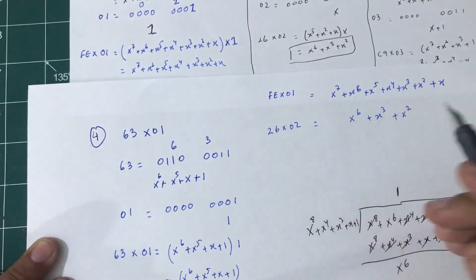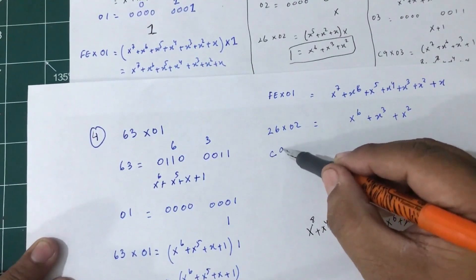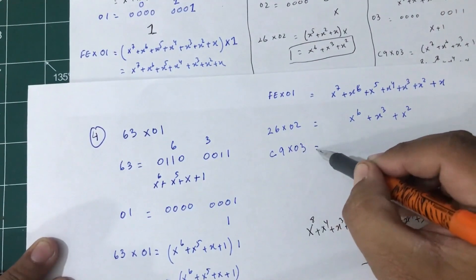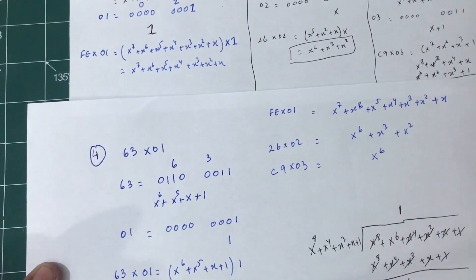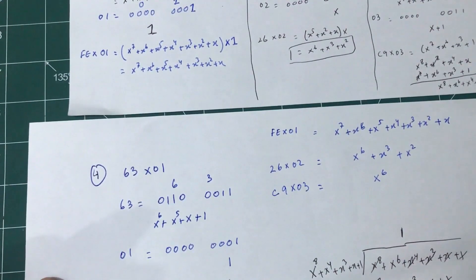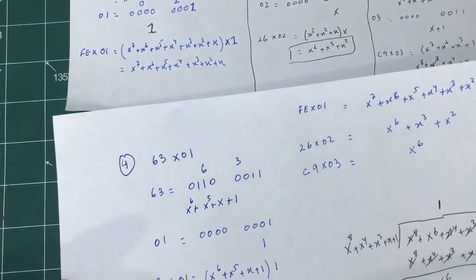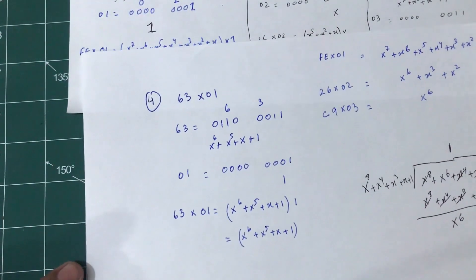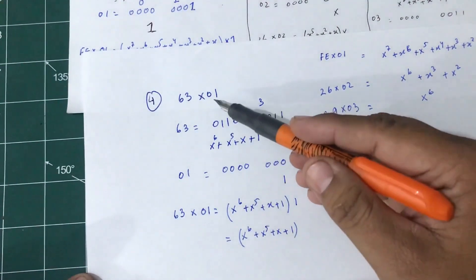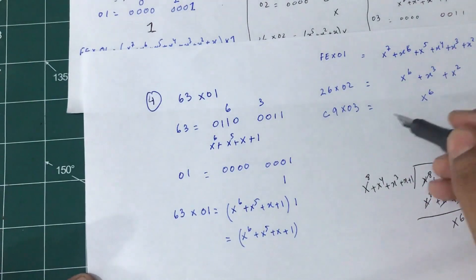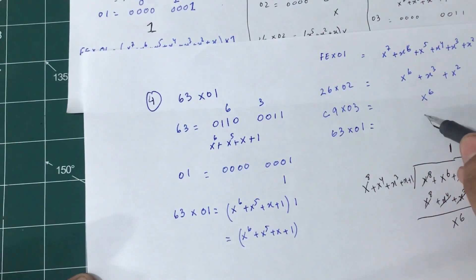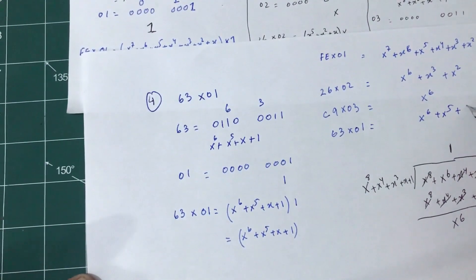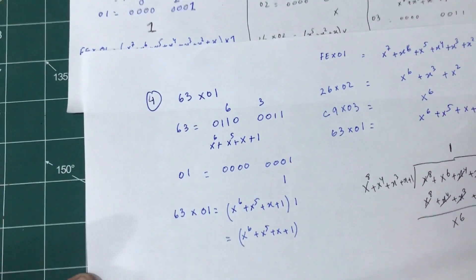When I multiplied C9 by 03, I got x to the 6 — that is the result we got after doing long division. And this is the result I got when I multiplied 63 by 01, which was x to the 6 plus x to the 5 plus x plus 1.